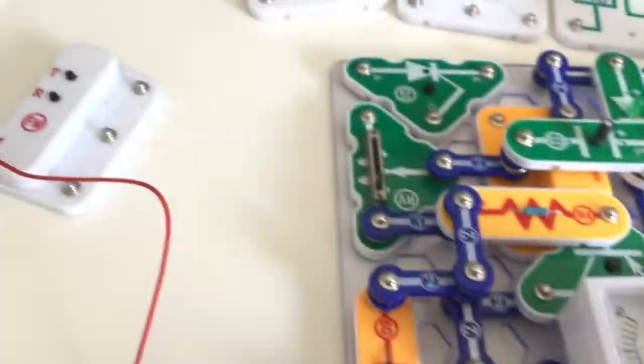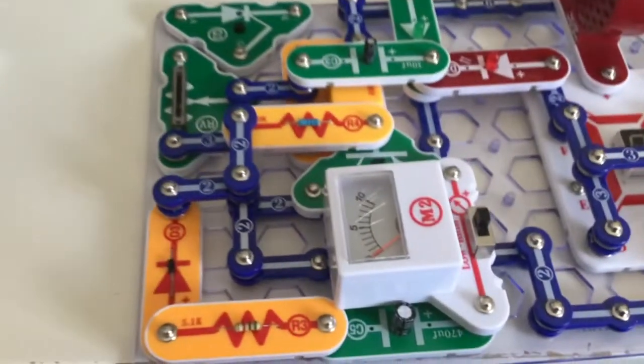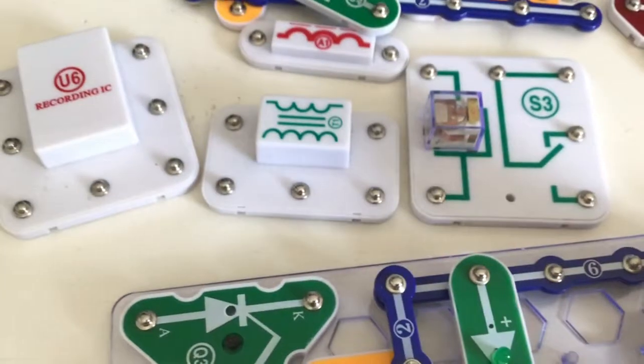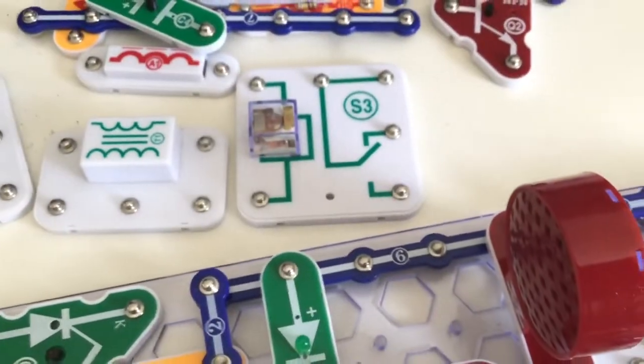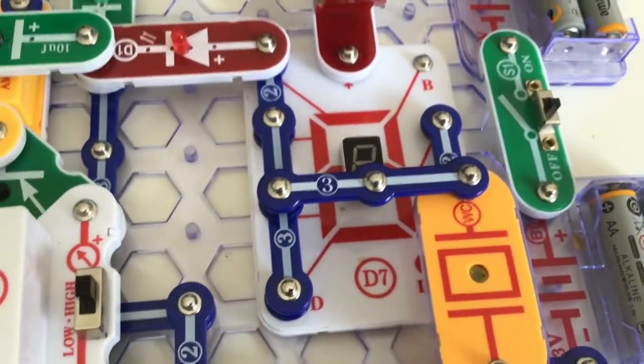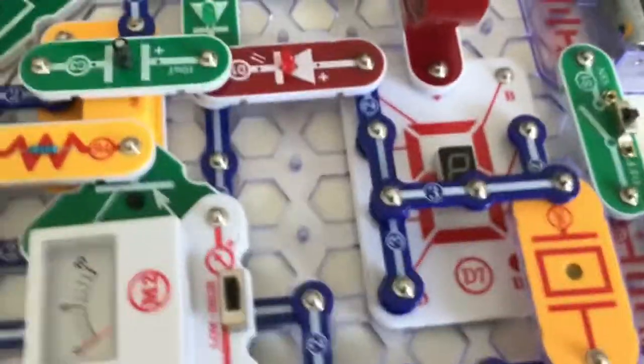This third set, which is Pro, includes an FM radio, recording IC, transformer, relay, meter, diode, and a seven-segment LED that shows the alphabet and numbers.